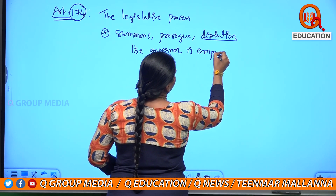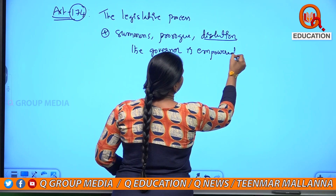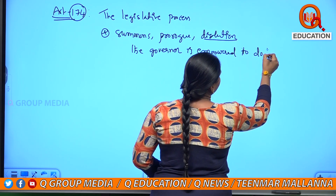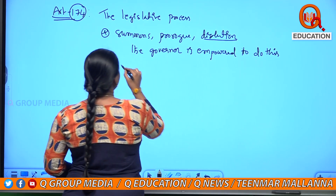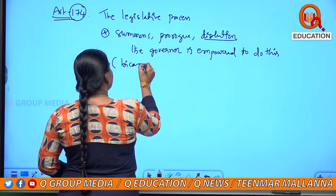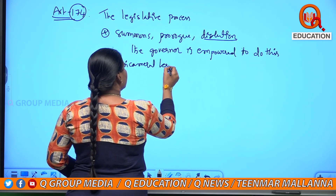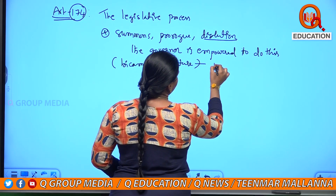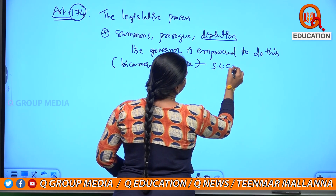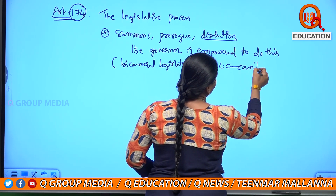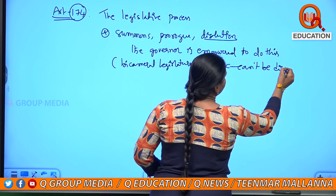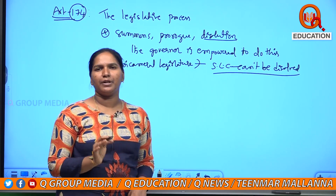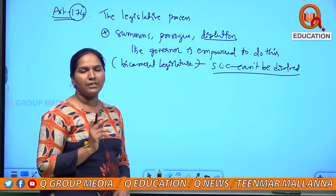In a bicameral legislature with both houses, the legislative council cannot be dissolved. Many people are confused here — the council is permanent, Rajya Sabha is permanent; it cannot be dissolved.